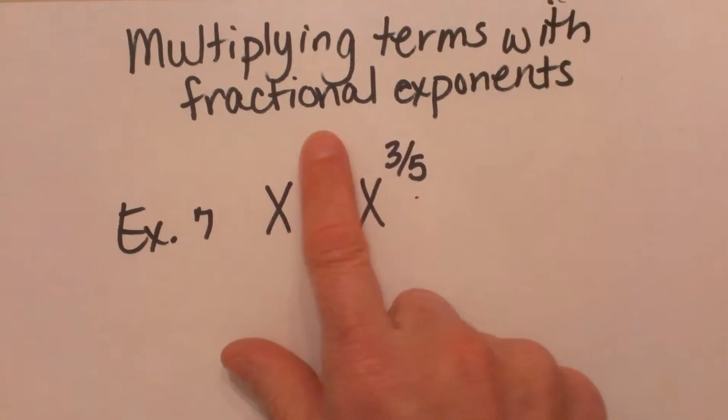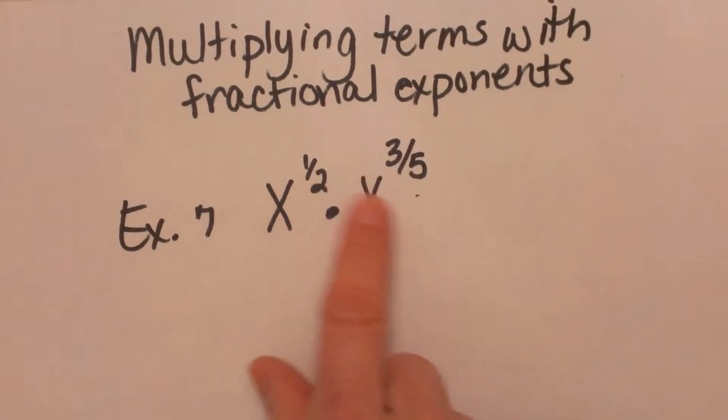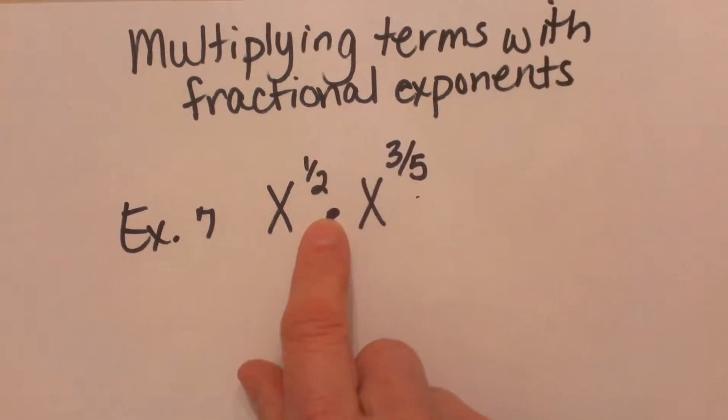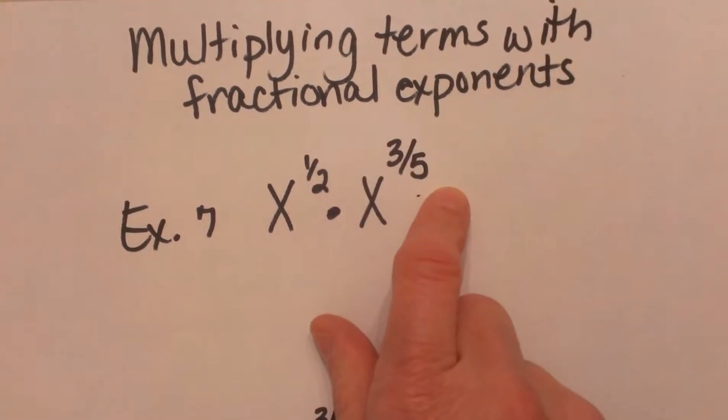Multiplying terms with fractional exponents. So here's our first example. We have x to the 1 half times x to the 3 fifths.